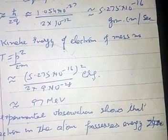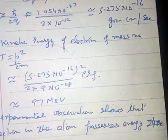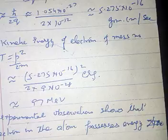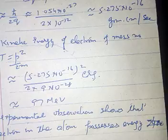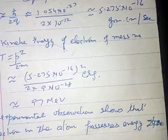But experimental observation shows that if the electron exists inside the nucleus, their kinetic energy must be of the order of 97 MeV. The experimental observation shows that no electron in the atom possessing energy more than 4 MeV. Clearly, the inference is that the electrons do not exist in the nucleus.